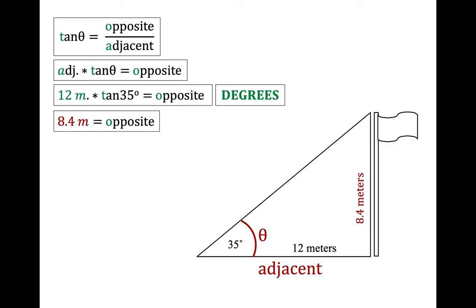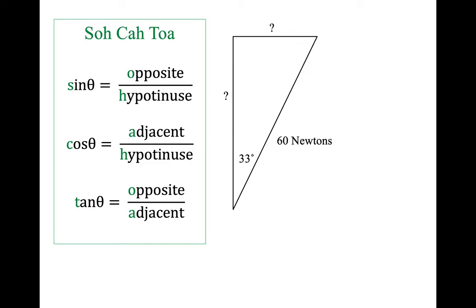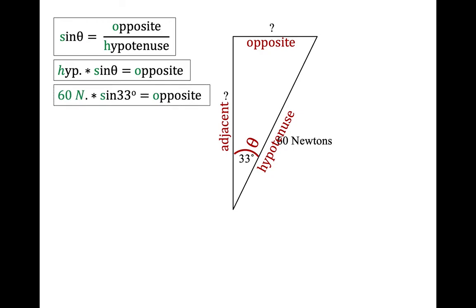This should make sense — the opposite side should be less than the adjacent side. Moving on to another example, still SOHCAHTOA. In this case we have the angle theta of 33 degrees and the hypotenuse of 60 newtons, and we're being asked to find both the adjacent and the opposite sides. That's okay — just do one at a time. Starting with the opposite side: sine of theta is opposite over hypotenuse. Rearranging by multiplying the hypotenuse to both sides and filling in the values: 60 newtons times sine of 33 degrees gives us the opposite side of 32.7 newtons.